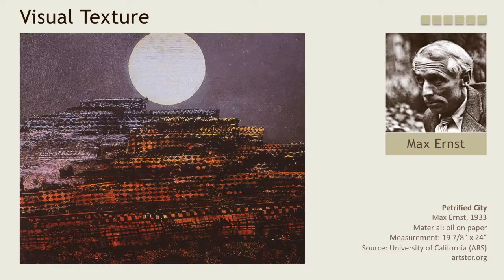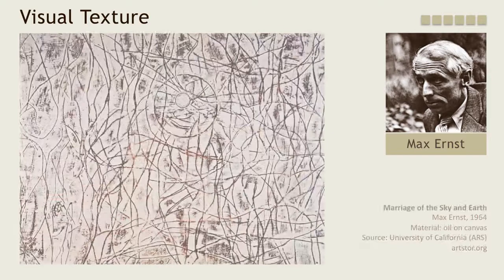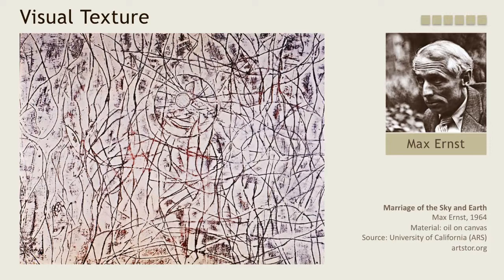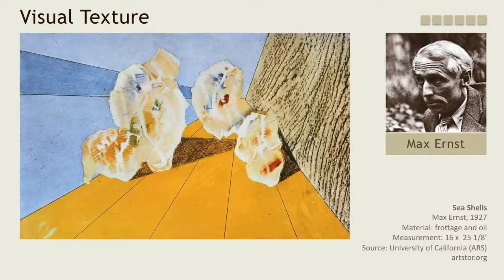One way of translating actual texture into visual texture is through a technique pioneered by surrealist Max Ernst called frottage. Frottage is a method in which the artist uses pencil or other drawing tools to make a rubbing on a substrate over a textured surface.